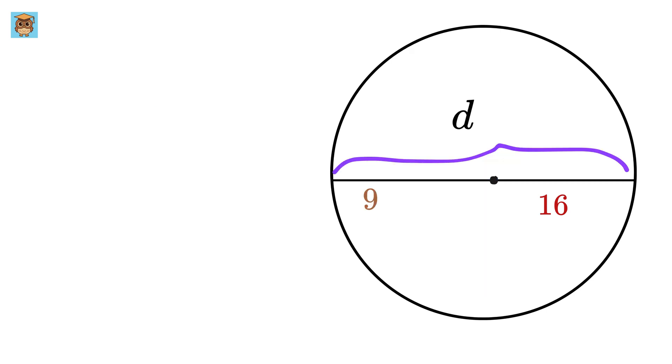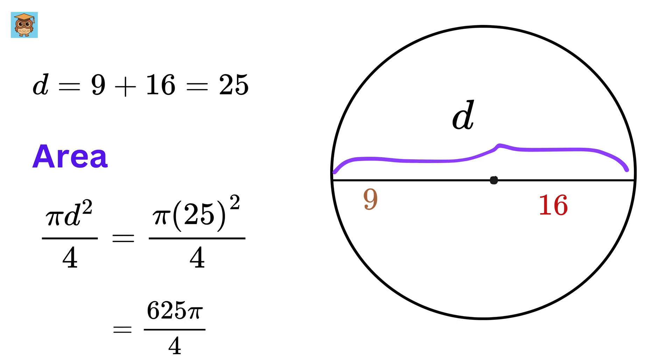Thus, the diameter of this circle equals x plus 16, or 9 plus 16, or 25. Now, the area of the circle is equal to pi times diameter squared over 4, or pi times 25 squared, or 625 over 4, or 156.25 pi.